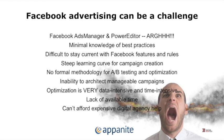Appenite was traditionally a consulting and product development company — we build apps and websites for our customers. When we were done building them, customers said, "Can you help us launch the product now?" So we ran hundreds and hundreds of Facebook ad campaigns for them. One of the partners of our firm is a very accomplished mathematician from Stanford Research, and he said he thought we could do this better. So we developed some algorithms and methodologies that sit above what Facebook lets you do, so that it isn't a frustrating experience and you can run very effective ad campaigns.